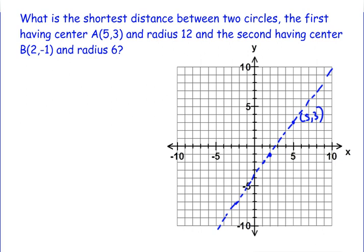So now we have this line and we need to figure out along that line, what is the shortest distance between the two circles?